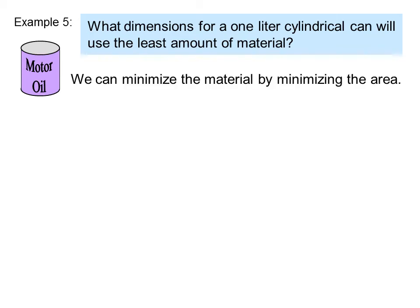We can minimize the material by minimizing the area. So the area used for the can is 2πr² plus 2πrh, where 2πr² is the area of the two ends, and 2πrh is the lateral area. That is the circumference times the height.